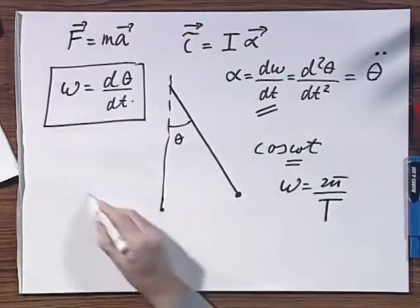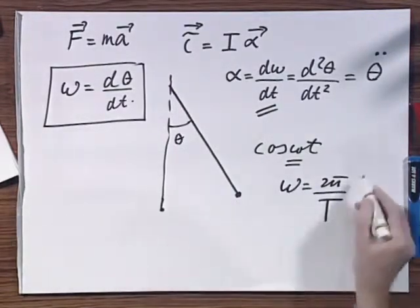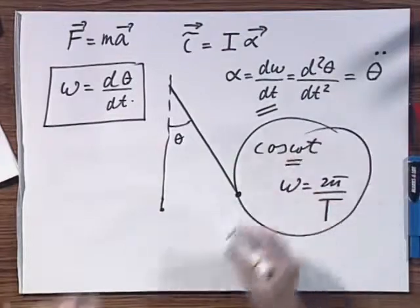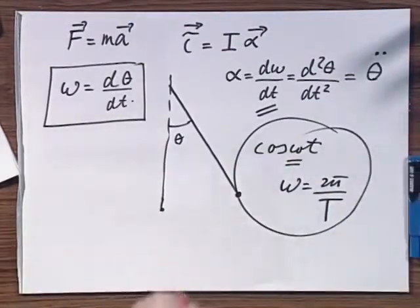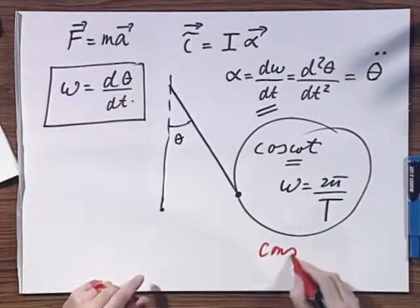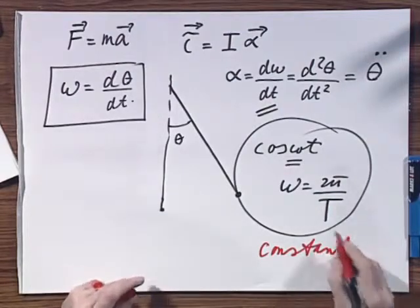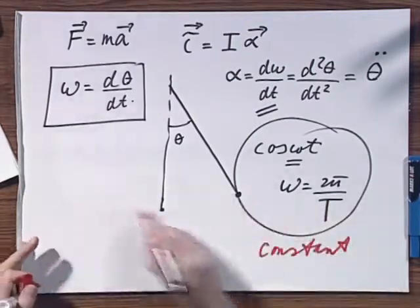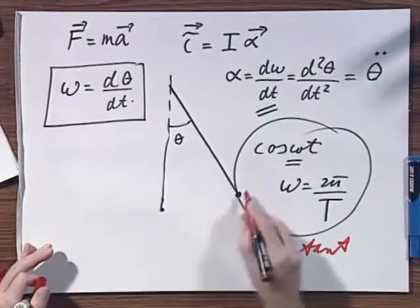This one, this omega, is constant all the time. It doesn't change, because effectively, what it states, it relates the period, it relates to the period of oscillation.